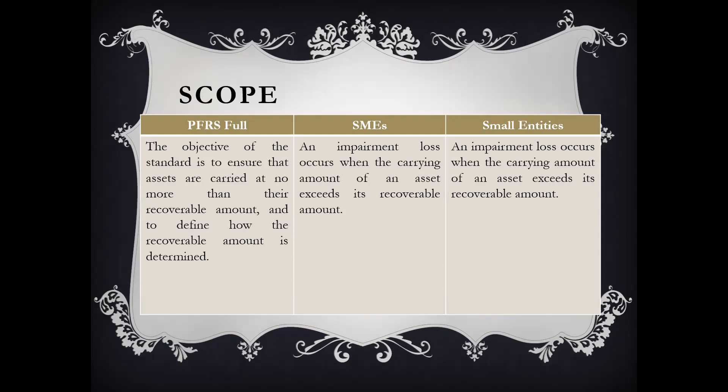For SME and small entity, it's the same thing. We should recognize impairment if the carrying amount of an asset exceeds the recoverable amount. Similar to the full PFRS, if the carrying amount of an asset is greater than the recoverable amount, that carrying amount should be adjusted to conform to the recoverable amount. Therefore, the difference will be considered as impairment loss.